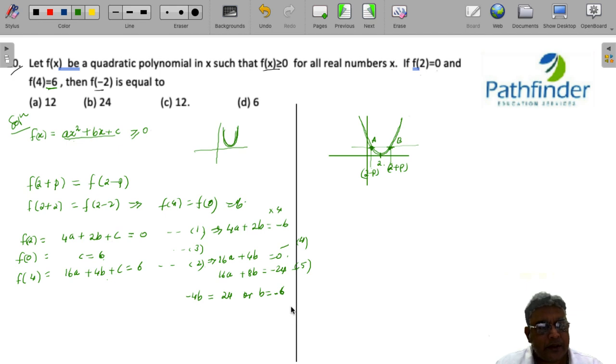So you got c as 6, b is -6. Now putting the value of c and b in equation 1, we have 4 times a plus 2 times -6 plus 6 is equal to 0 or 4 times a is equal to 6, a is equal to 6 by 4 or 3 by 2.